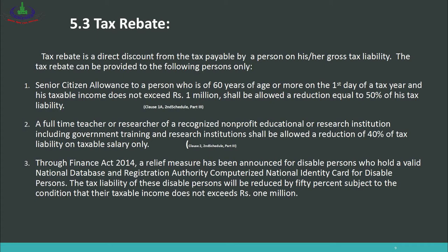Number 2: A full-time teacher or researcher of a recognized non-profit educational or research institution — including government training and research institutions — shall be allowed a reduction of 40% of tax liability on taxable salary only. So full-time teachers and researchers at educational institutions or government research institutions are allowed to reduce their tax liability by 40%, and they pay tax only on the remaining amount. Note: this 40% reduction applies only to the tax calculated on taxable salary income.